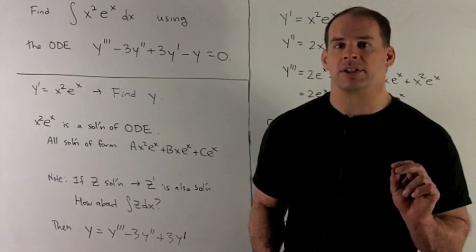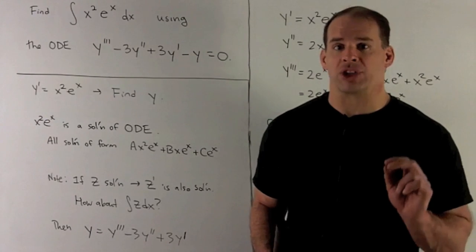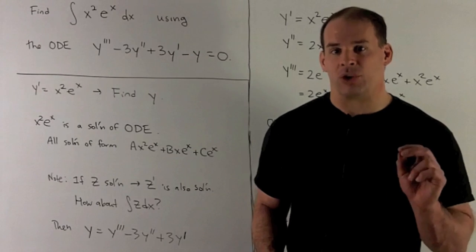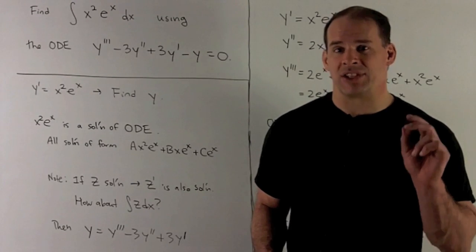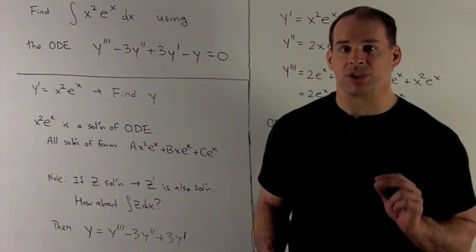One thing we can ask is, how about if we go in the other direction? How about if I take the antiderivative? We're going to assume that there's a solution that's an antiderivative, and that's going to get us to our answer.